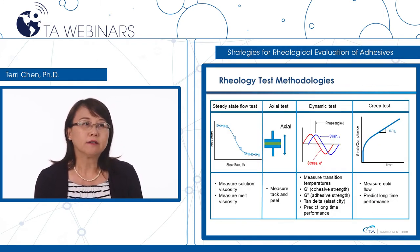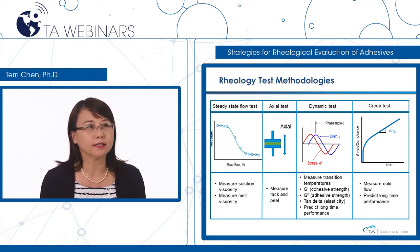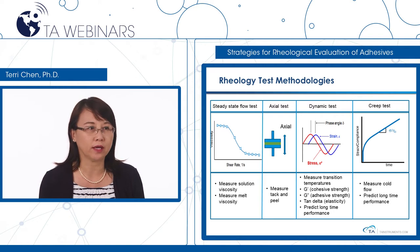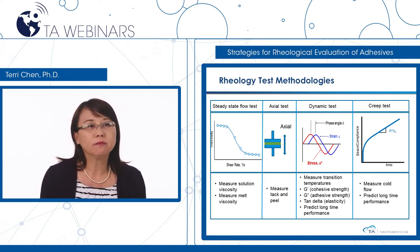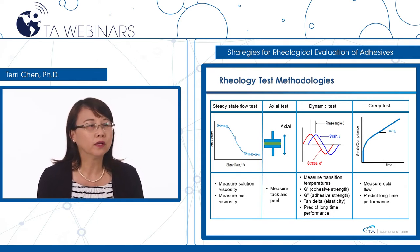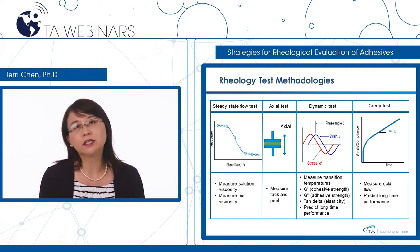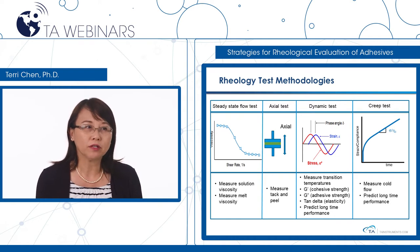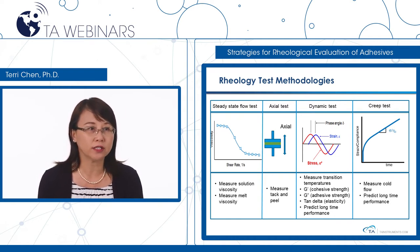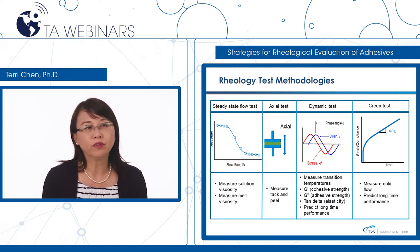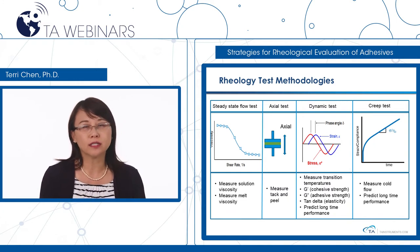This table lists four commonly used rheological tests in adhesive analysis. First, a steady flow test can measure shear viscosity over a wide range of shear rate. Axial testing on a rheometer is typically used for measuring tack and peel. Dynamic oscillatory tests are the most popularly used in adhesive analysis — they measure transition temperatures such as glass transition, and parameters such as G prime, G double prime, and tangent delta are directly used to correlate with adhesive performance. A creep experiment can also be applied to directly measure shear resistance and how well an adhesive resists cold flow over time.